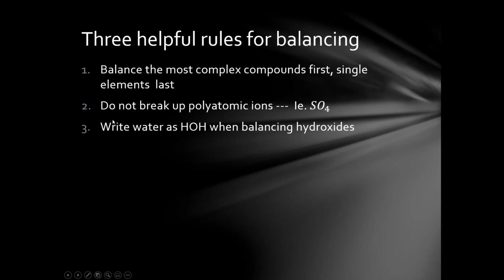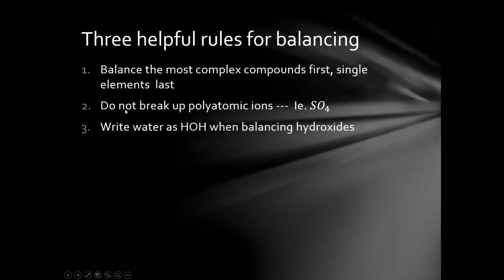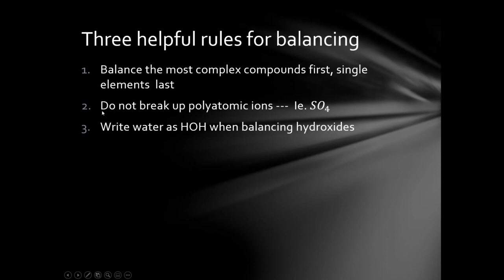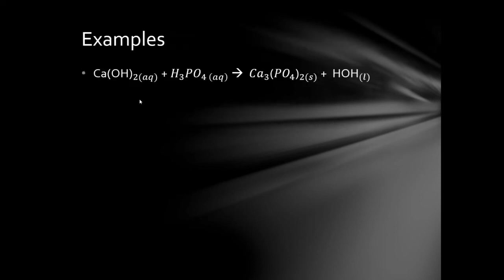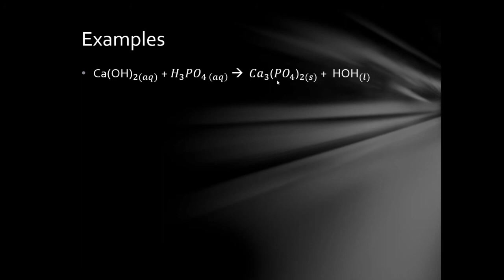I made another video where I walk through all the examples live — it's on Blackboard called 'Balancing Equations Examples' — check that out if you're having trouble. Here's an example: calcium hydroxide plus phosphoric acid yields calcium phosphate Ca3(PO4)2 and HOH. Start with the most complicated compound, Ca3(PO4)2: three calciums means put a 3 in front of calcium hydroxide, two phosphates here means put a 2 in front of H3PO4, which changes the hydrogen count.